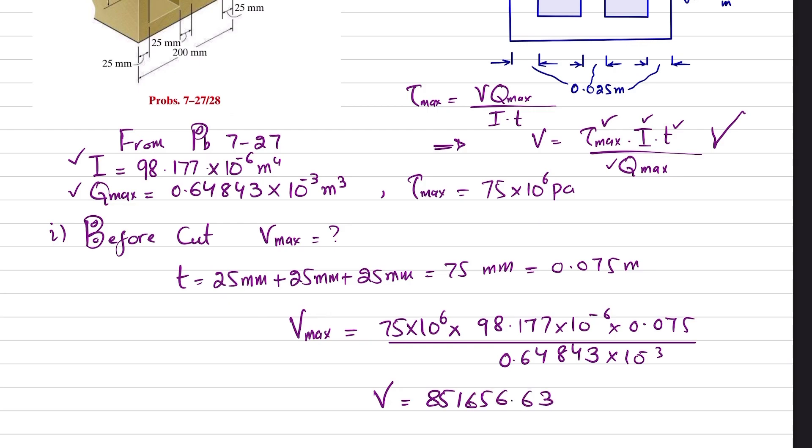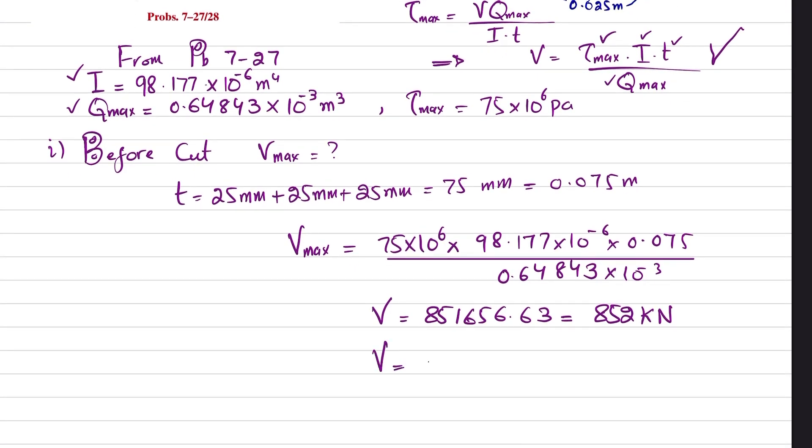That is equal to 852 kilonewtons. So this is the shear force that can be applied before this longitudinal slit is made—before cut. This is the answer of our first part.